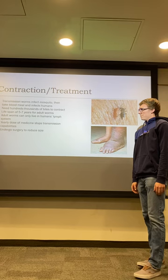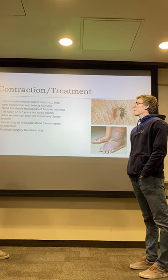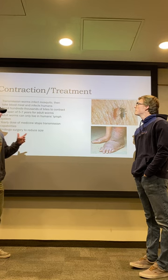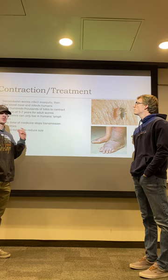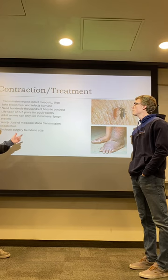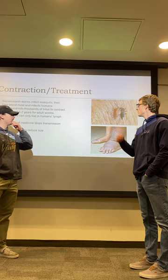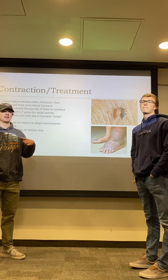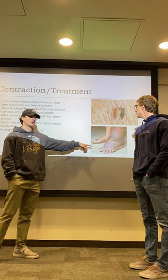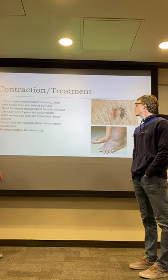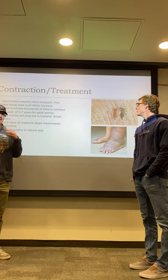Next is how you contract it and ways to treat it. There is an acute and a chronic stage. In the acute stage, worms travel to the lymph and infect it there, causing swelling, itching, and pain. In the chronic stage, the microfilariae grow into adult worms that can live for five to seven years in the lymph of humans, causing major swelling, a lot of pain, and significant discomfort. Once it reaches the chronic stage, there isn't really a set cure.